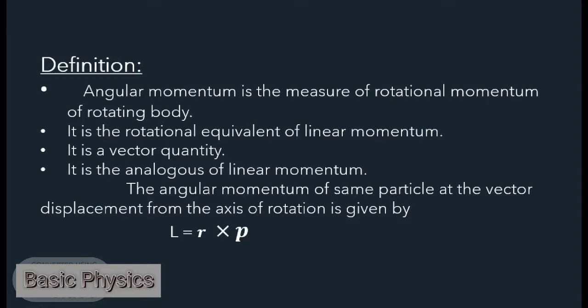The angular momentum of a particle at the vector displacement from the axis of rotation is given by L equals r cross p.